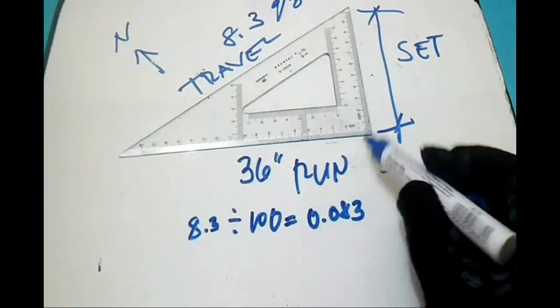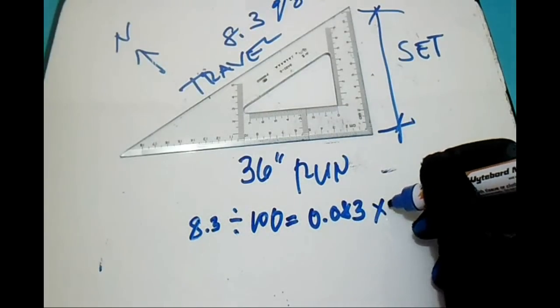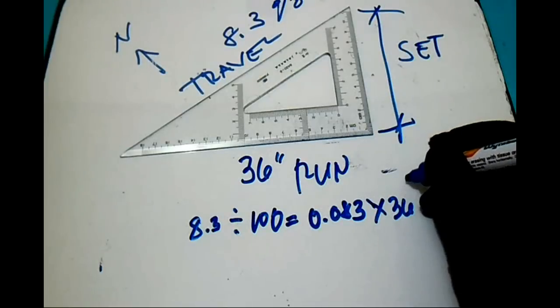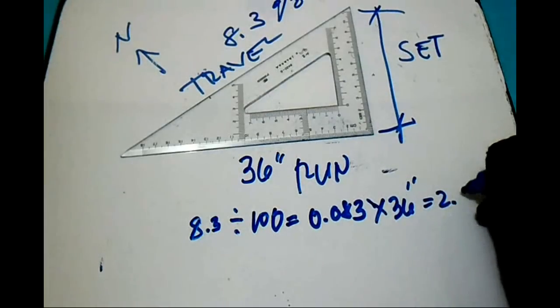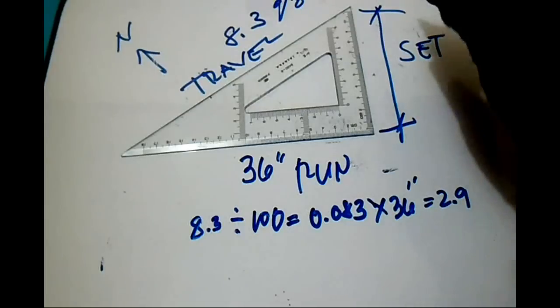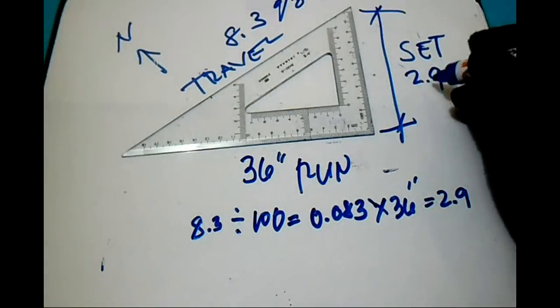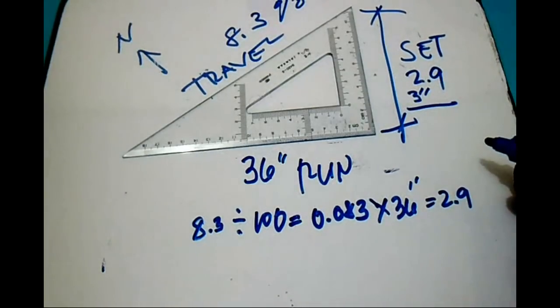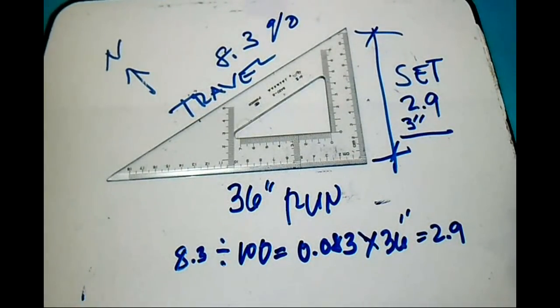Just multiply 0.083 by 36 inches, and the answer is 2.9. So our set is 2.9 inches. If we round it, this is 3 inches. This is a very simple way to find the slope.